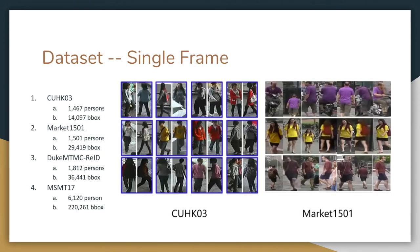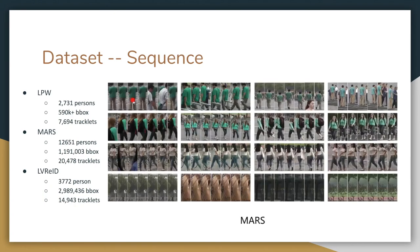There are several commonly used datasets for single frame: CUHK03, Market-1501, DukeMTMC-reID, and MSMT17. These provide thousands of person IDs and hundreds of thousands of bounding boxes. We also have sequence-based datasets such as LPW, MARS, and LV re-ID, which provide thousands of person IDs, tens of thousands of tracklets, and even millions of bounding boxes.